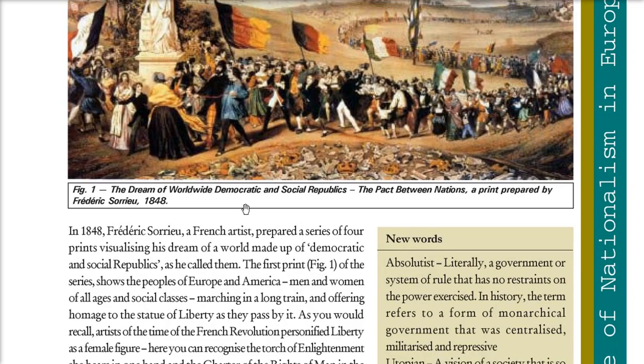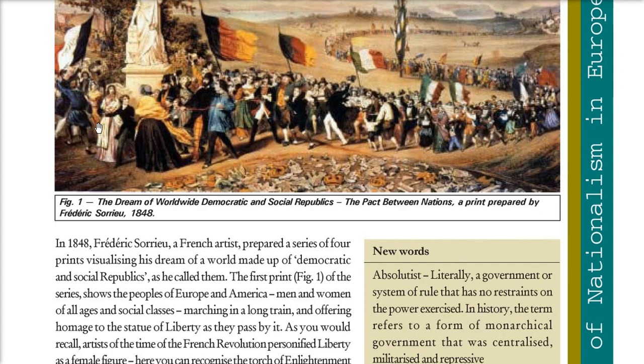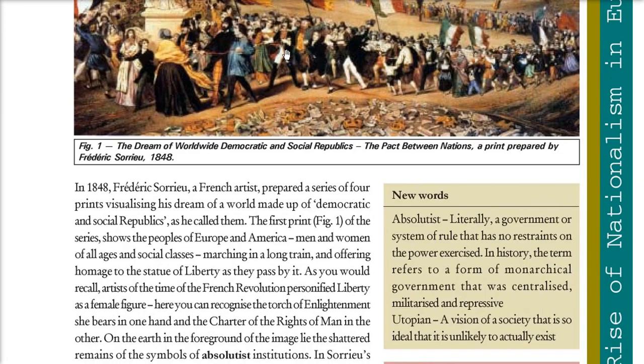In 1848, Sorrieu was a French artist who prepared a series of four visual prints. That was his dream for democratic and social republics. This is the first picture, showing people of Europe and America — men and women of all ages and all social classes — marching in a long train and offering homage to the statue of liberty as they pass by.